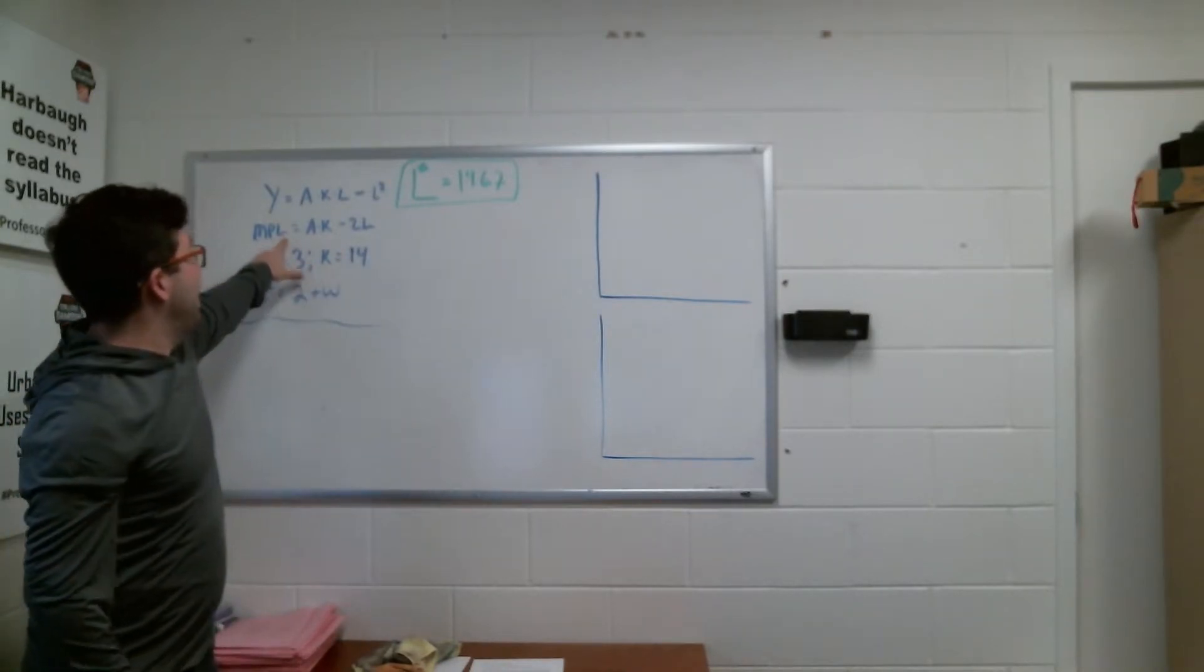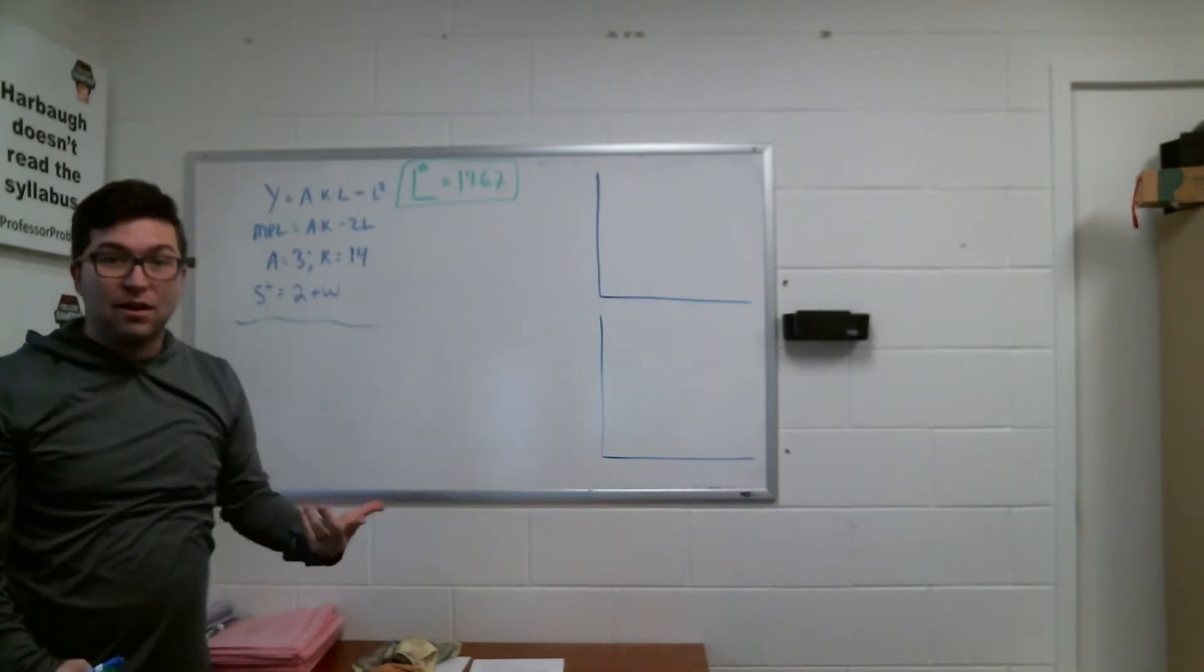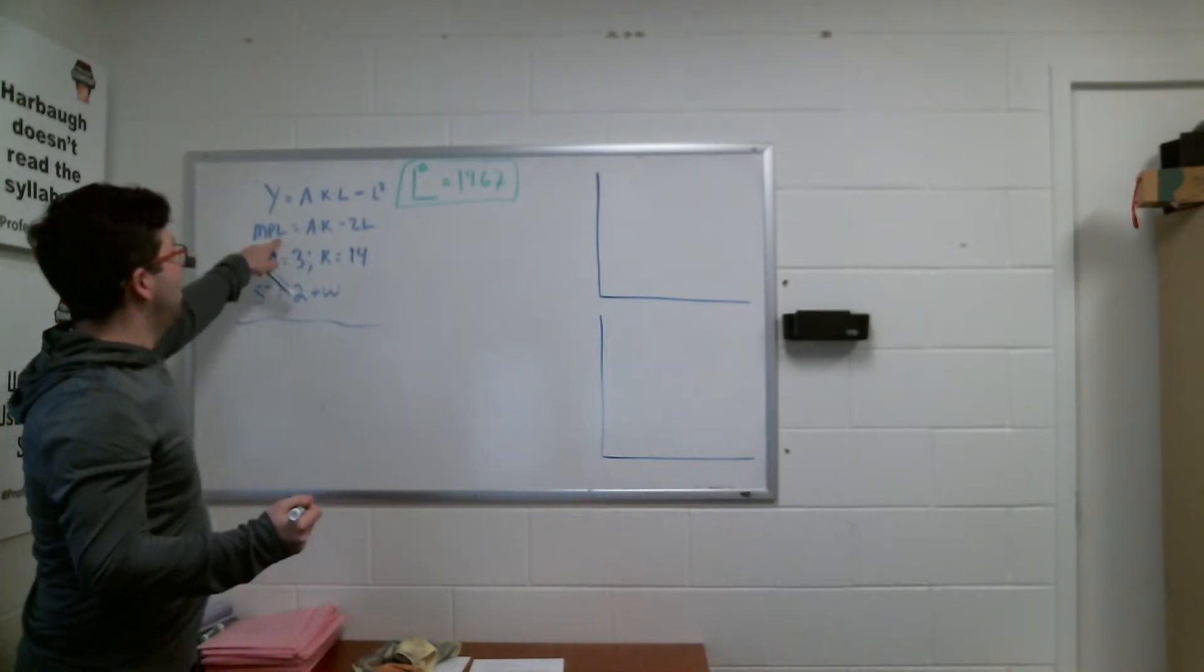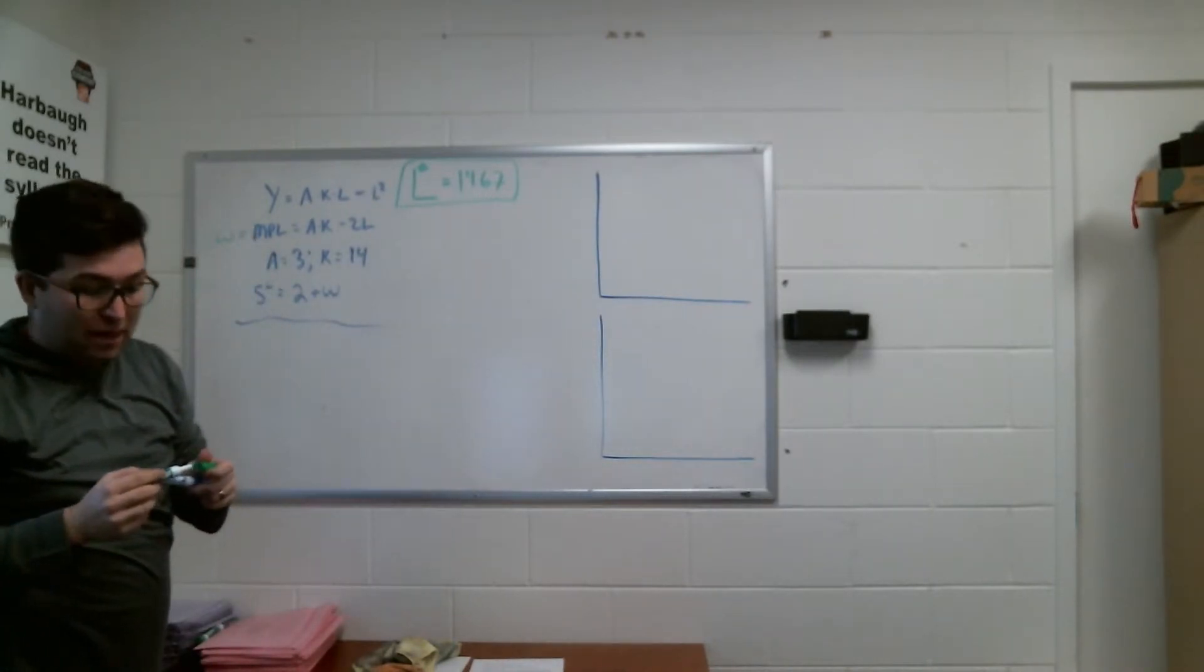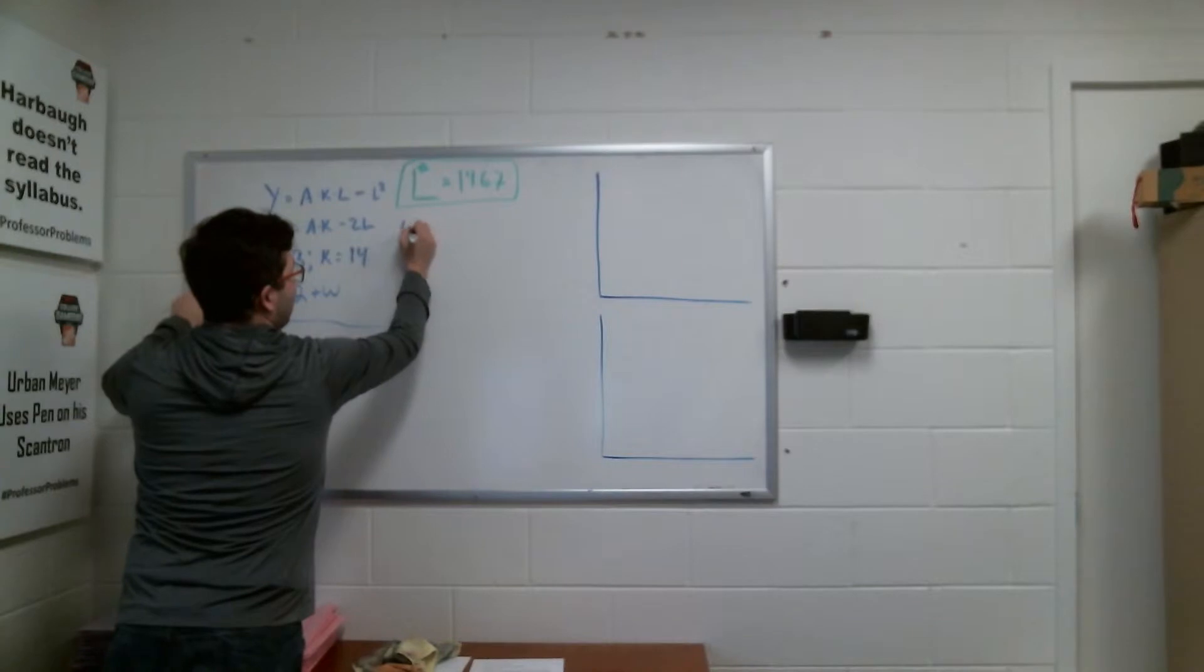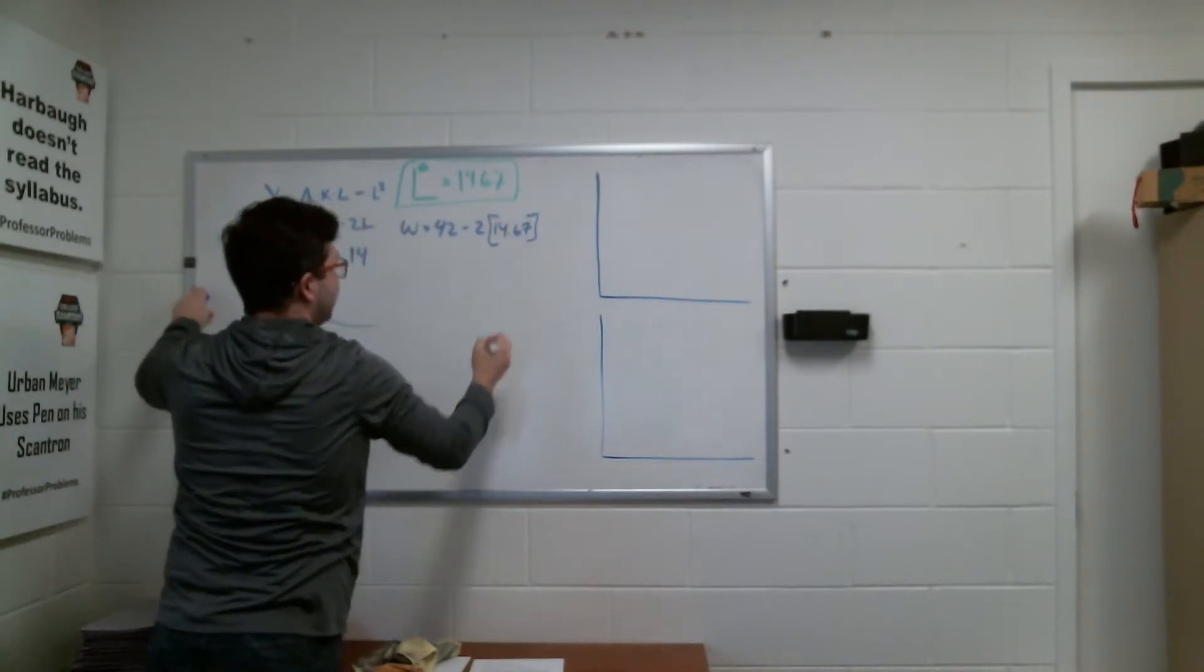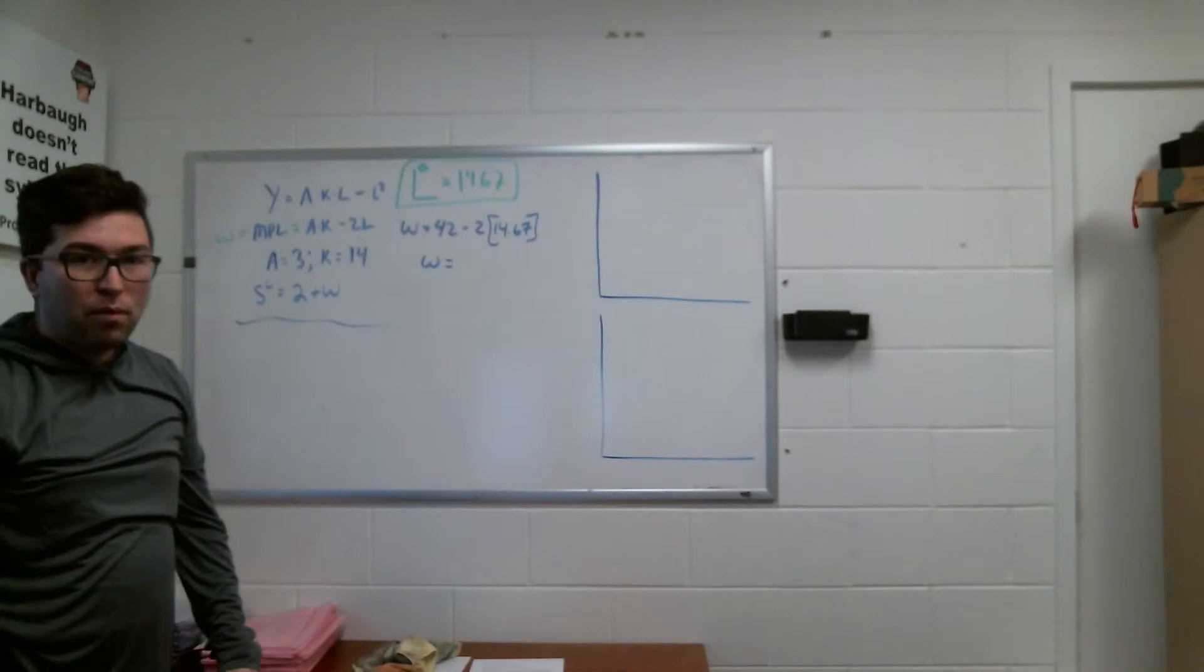Now we can plug that in either to labor demand, which is my MPL function, or back into the supply of labor to get the real wage that would settle this. I personally like to do both of them if I was on an exam or a problem set, just to make sure that I didn't make a simple math error. We can go ahead and start with the MPL, which we know is equal to wage. Equal to wage, because that's where the firms are going to choose to maximize their overall profits. So let's say that wage is going to equal A times K, which we know is 42, minus 2 times L, which I know is 14.67. I go ahead and plug all that into my calculator, and I will get wage equal to 12.67.